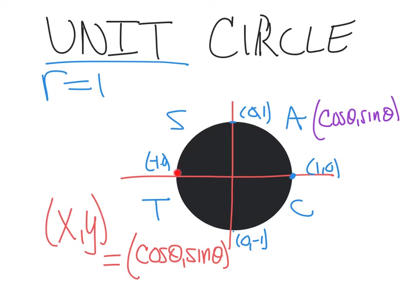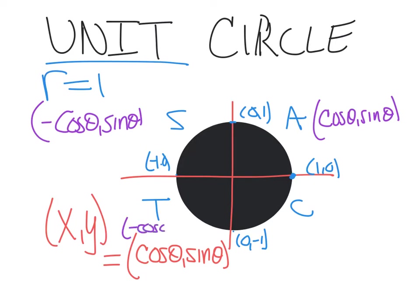If we put a coordinate in quadrant 2, sine is positive but cosine is negative, so you write negative cosine theta, sine theta - that's like going over a negative x and up a positive y. In quadrant 3, only tangent is positive, so it's negative cosine theta, negative sine theta. And in quadrant 4, it's positive cosine theta, negative sine theta.